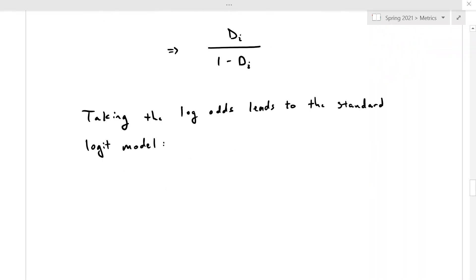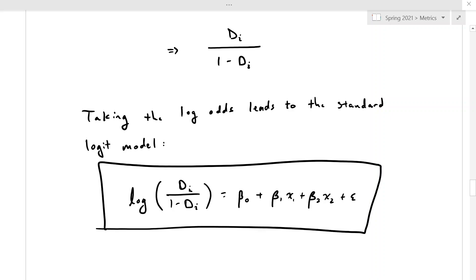And what we have there is the log of the odds of success, or the odds of a 1 in general, is going to be equal to some set of independent variables. So this formula is what we're going to be estimating when we calculate our logit model.